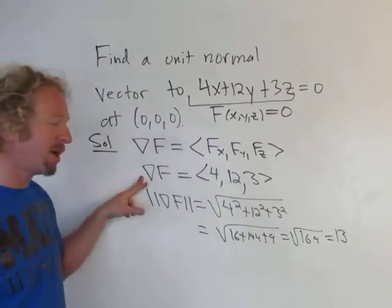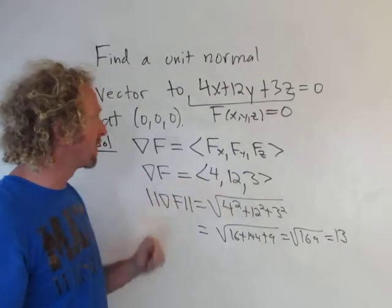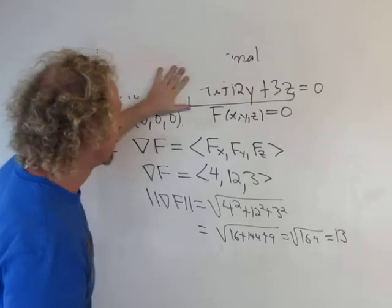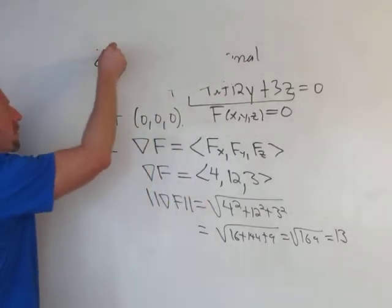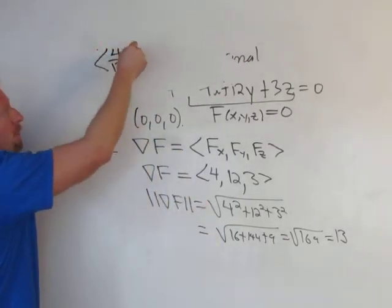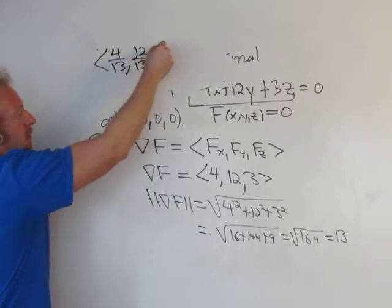So now to turn this into a unit vector, we just have to divide everything by 13. So the final answer will be 4 over 13, 12 over 13, 3 over 13.